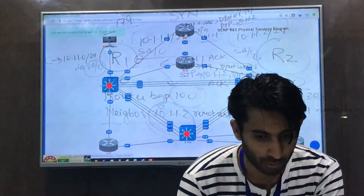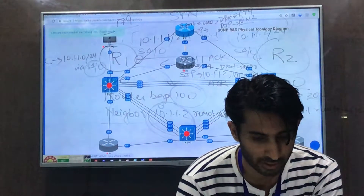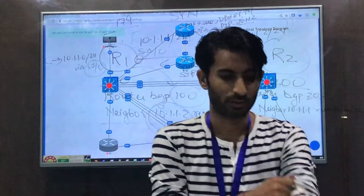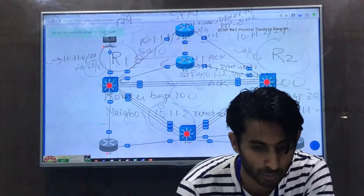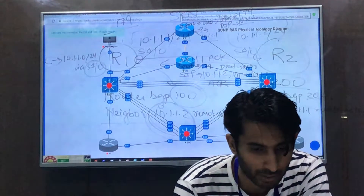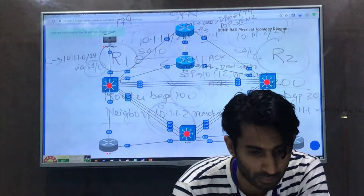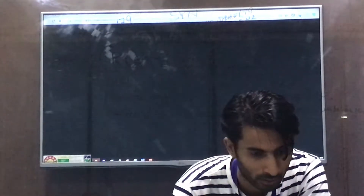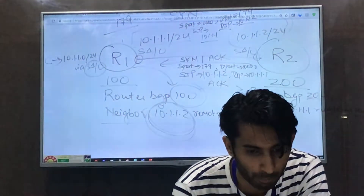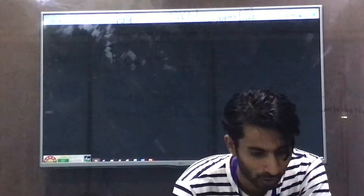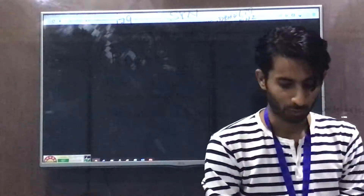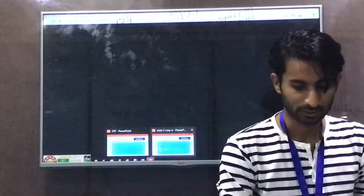Here in the CLI we have Router 1 and Router 2, connected to each other via Serial 1/2 on both sides. We will assign IP addresses and form the BGP neighbors. Router 1 and Router 2 are booting up, so let's quickly review the next slide while we wait.